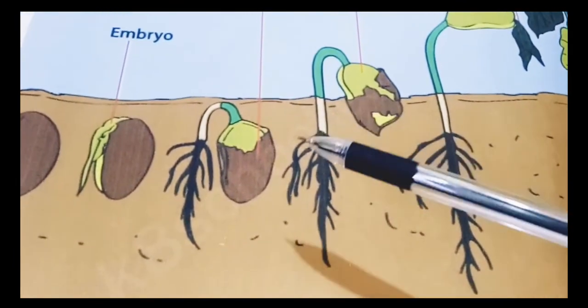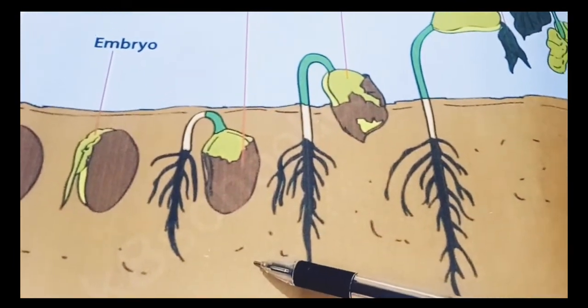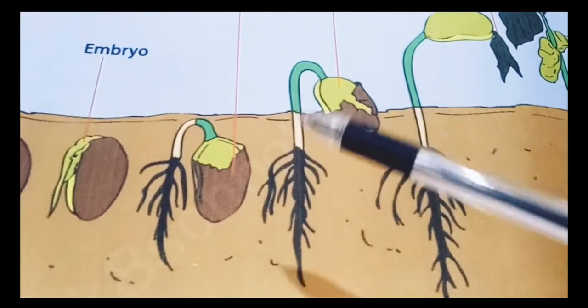The whole process in which the development of a seed into a seedling is called germination and it needs some conditions to grow. First it needs water, it needs soil, some moisture and air to grow.